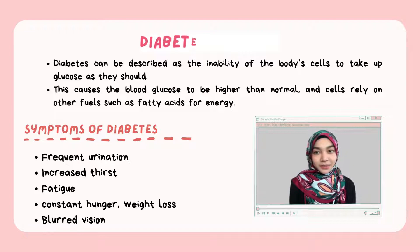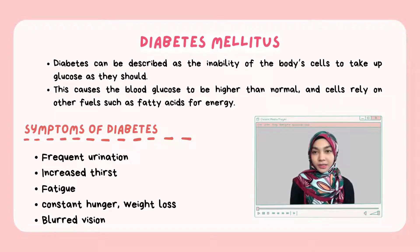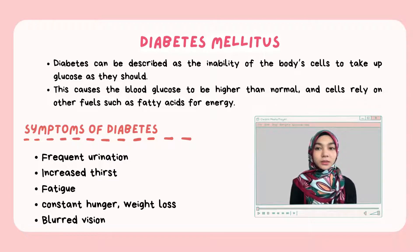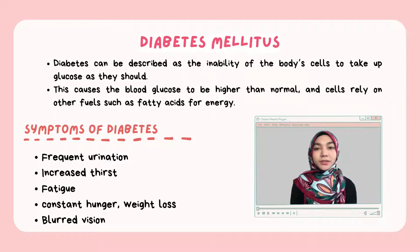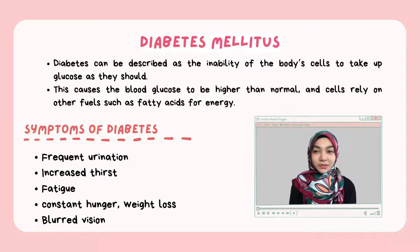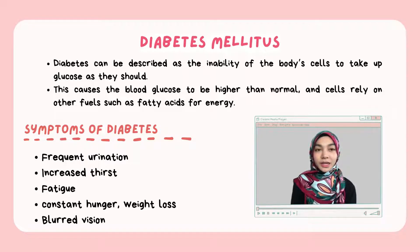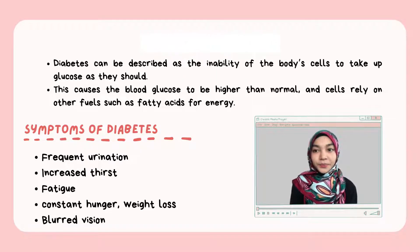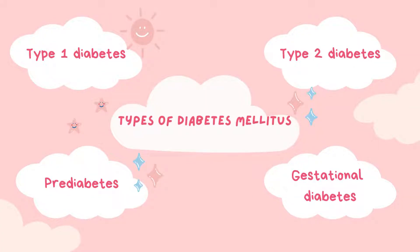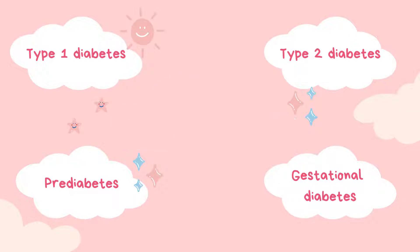Diabetes can be described as the inability of the body's cells to take up glucose as they should, causing blood glucose to be higher than normal and forcing cells to rely on other fuels such as fatty acids for energy. Symptoms include frequent urination, increased thirst, and others. Types of diabetes include type 1, type 2, pre-diabetes, and gestational diabetes.